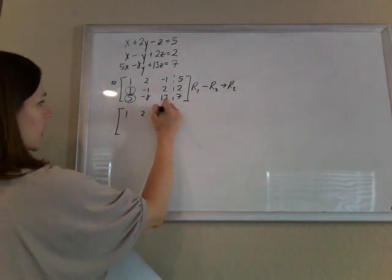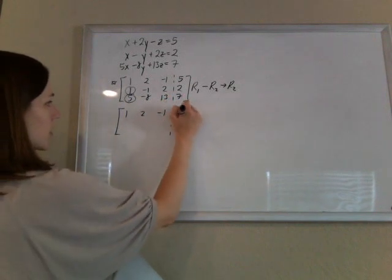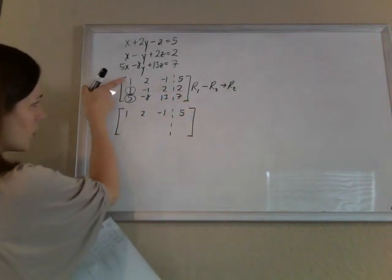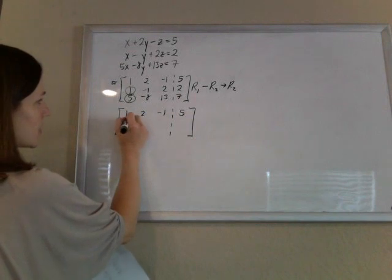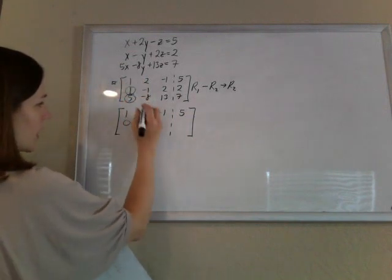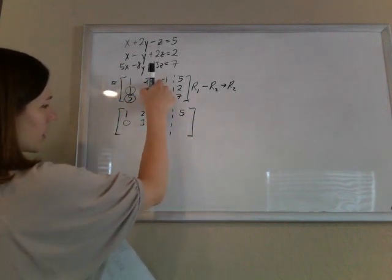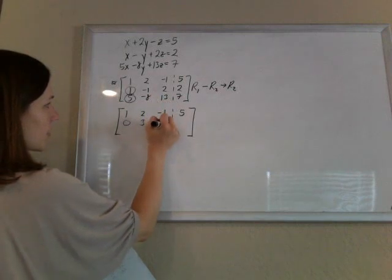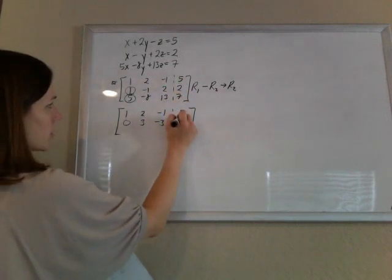Leaving that first guy the same. 1 minus 1 is 0. 2 minus a minus 1 is 3. Negative 1 minus 2 is negative 3. 5 minus 2 is 3.